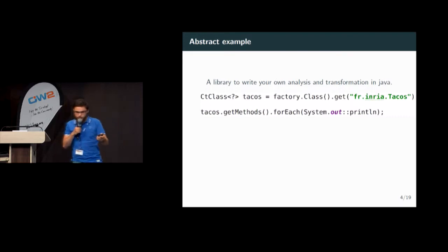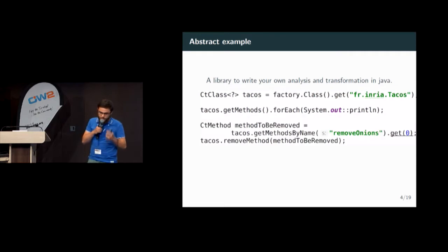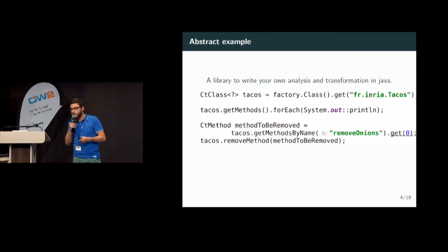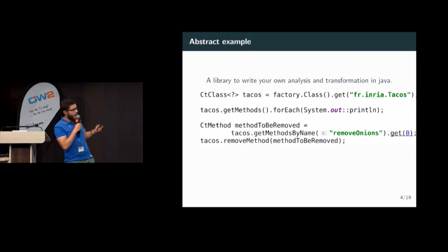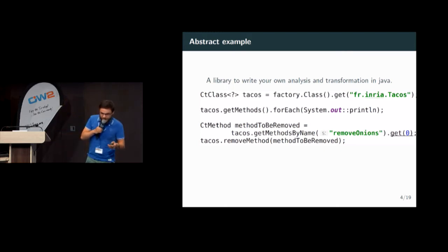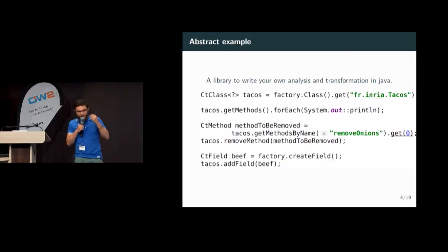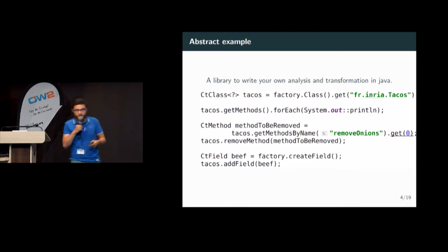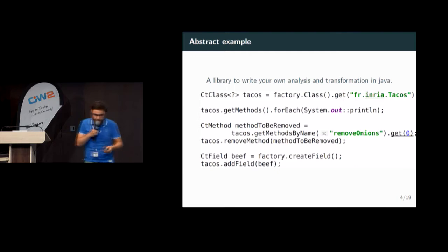I can also transform the class Tacos. For instance, I will remove the method removeOnions, because I like onions in my tacos. And finally, I can also add a new field in the class Tacos — I will add some beef.